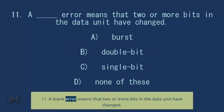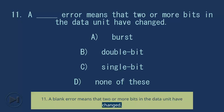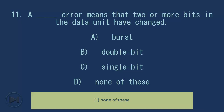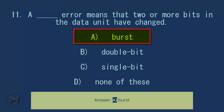Question 11: A blank error means that two or more bits in the data unit have changed. A) burst, B) double bit, C) single bit, D) none of these. Answer: A, burst.